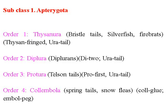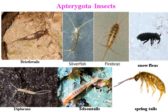Subclass Apterygota includes orders such as Thysanura (bristletails) — examples are silverfish and firebrats. 'Thysa' means fringe and a fringed tail-like structure is observed in this subclass. Second is Diplura, meaning two tails. Third is Protura, meaning first. Fourth is Collembola — springtails and snow flies — where a glue-like and peg-like structure called the collophore is attached to the body. Examples shown include bristletails, silverfish, firebrats, snow flies, springtails, diplura, and decrylion.